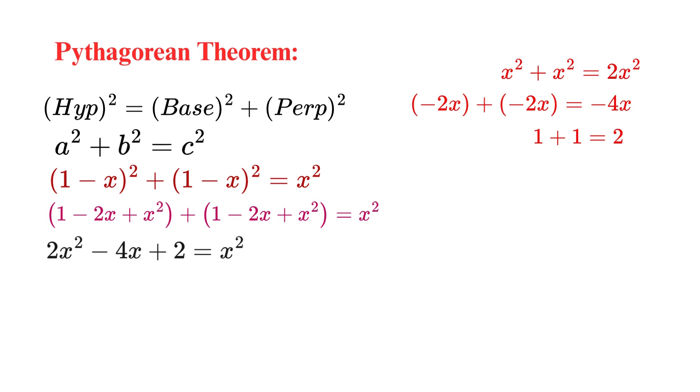Now, we want to get every term on one side of the equation. So, for this, we subtract x² from both sides. Now, look at the left side. Here, we have 2x² minus x², which gives us just x². On the right side, we have x² minus x². They just cancel each other, and we get 0. So, our equation becomes x² - 4x + 2 = 0.